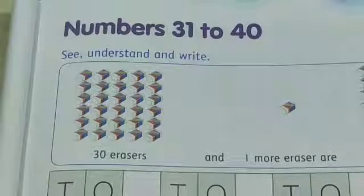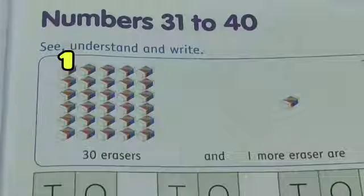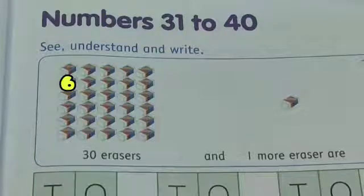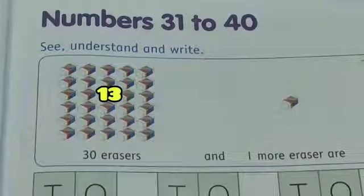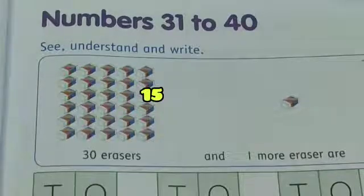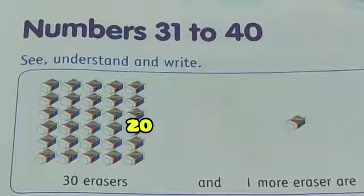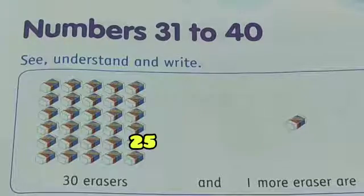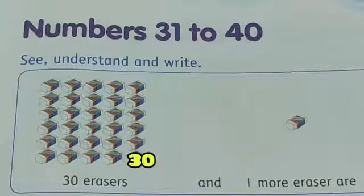See, understand and write. Children, see there are so many erasers. Let's count: one, two, three, four, five, six, seven, eight... continuing through all the erasers... twenty-eight, twenty-nine, thirty. 30 erasers.